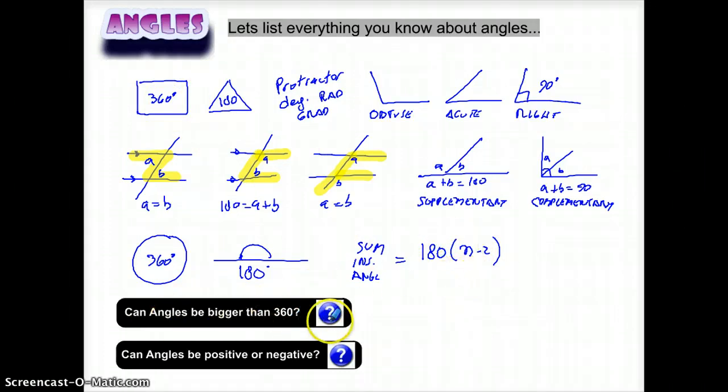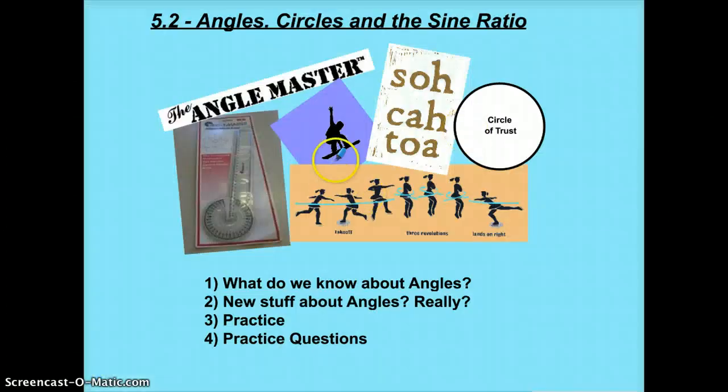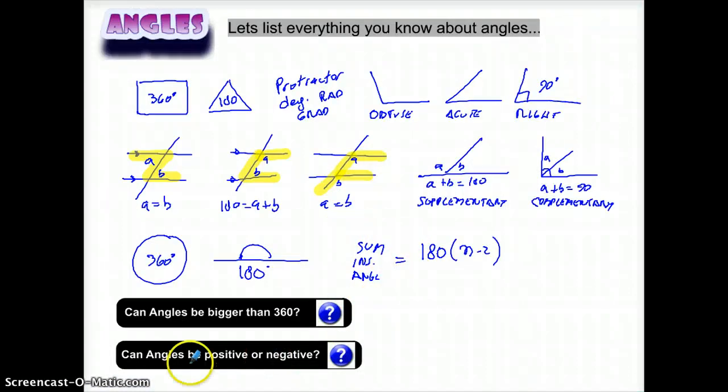So then I ask, can angles be bigger than 360? And usually people say no. And then I ask them, okay, any snowboarders? What's the biggest turn you've done? Or ice skaters? Figure skating? And you do angles that are bigger than 360. Because that means that you turn more than once. And that's okay.